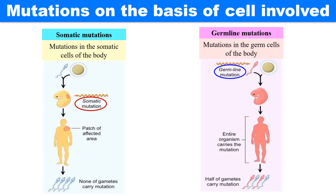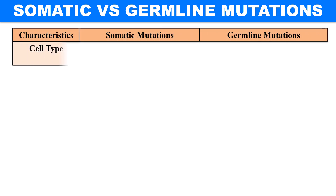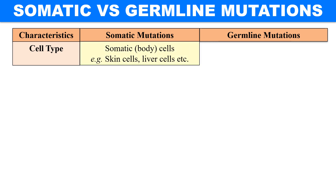So those are some basics about somatic and germinal or germline mutations. Now let's discuss some differences between somatic and germline mutations. The first characteristic is the cell type. Somatic mutations occur in somatic cells like skin cells and liver cells.